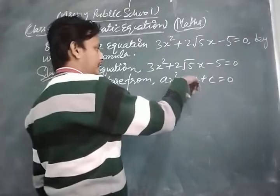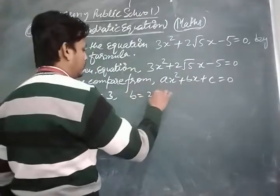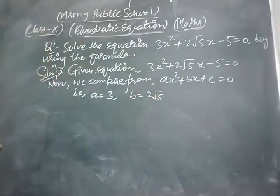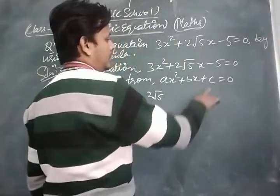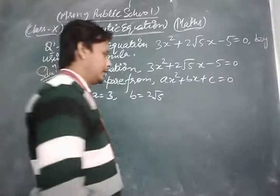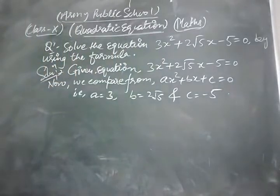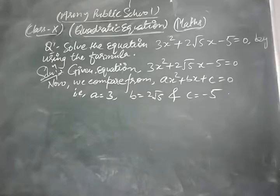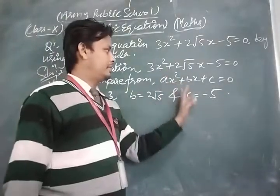The coefficient of x is b = 2√5. And c is the constant term, which is -5. So in this way, we find a = 3, b = 2√5, and c = -5.